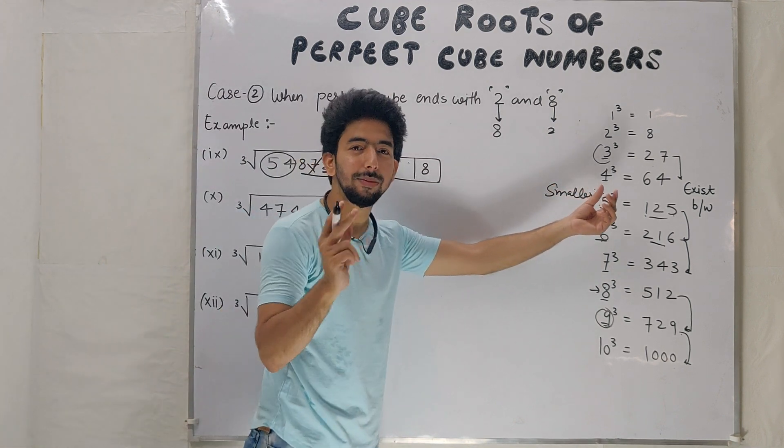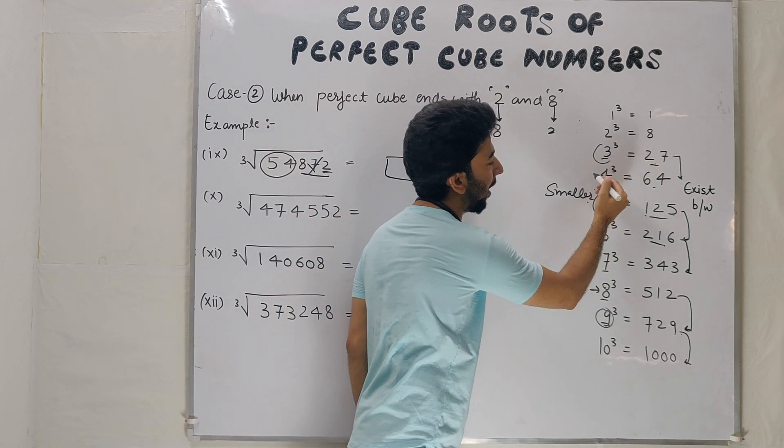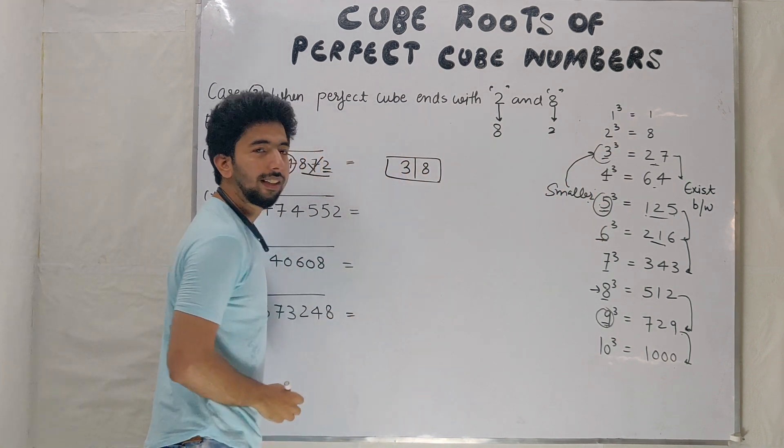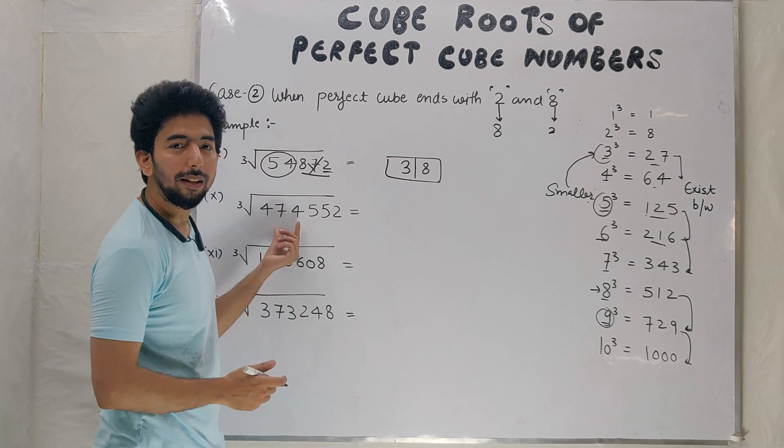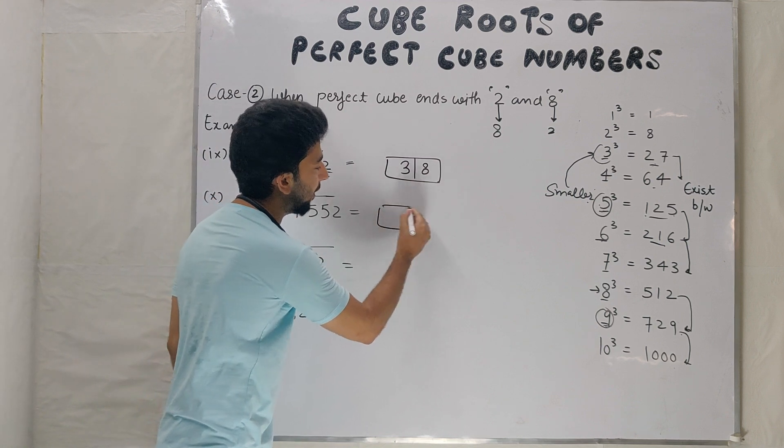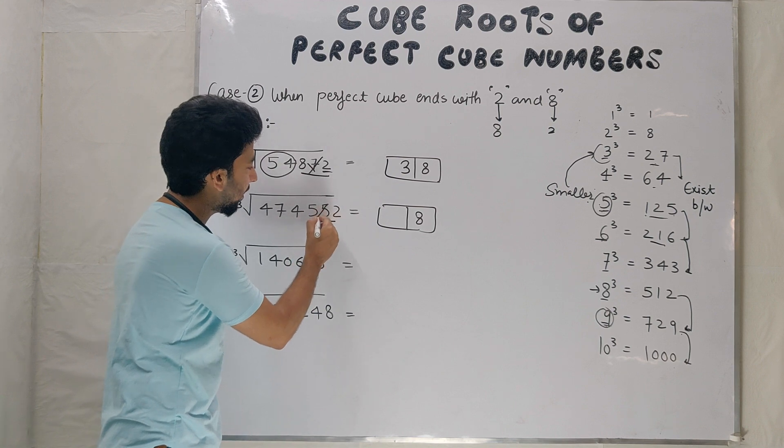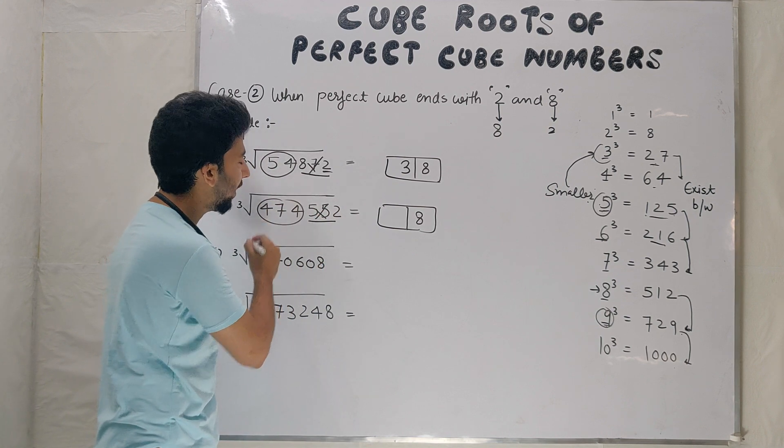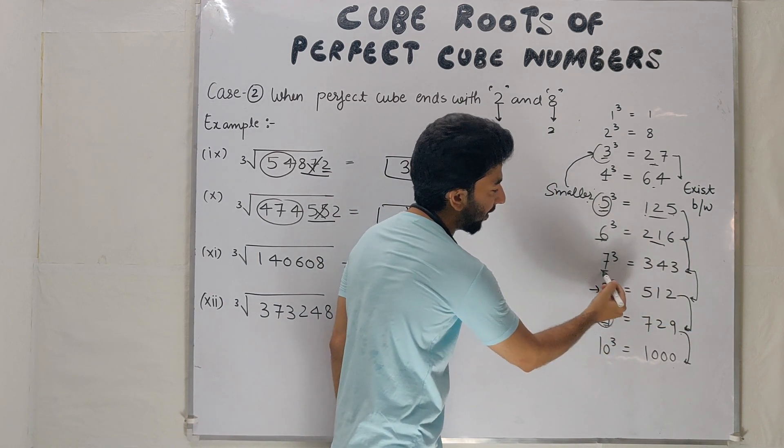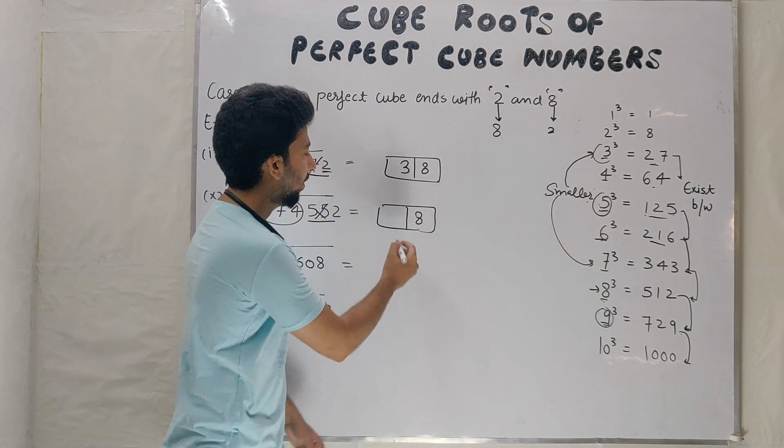First example: between 64 and smaller one. Example number 10: 474552. Ends with 2, unit place 8. Cancel 3 digits, we have 474. Between 343 and 512, which are 7 and 8. Smaller one is 7, so 78.